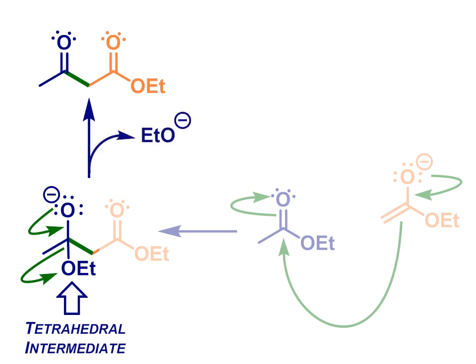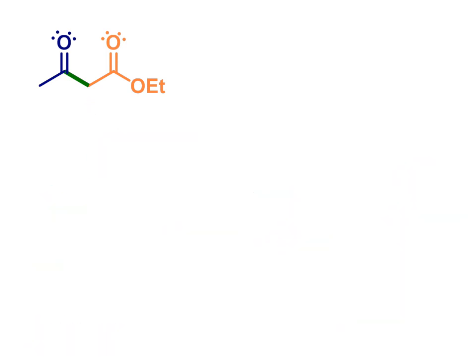That means our product is a beta-ketoester, i.e. an ester with a carbonyl group at the beta position relative to the carbonyl. Contrast this to the product with the aldol reaction, which is our beta-hydroxy aldehyde.